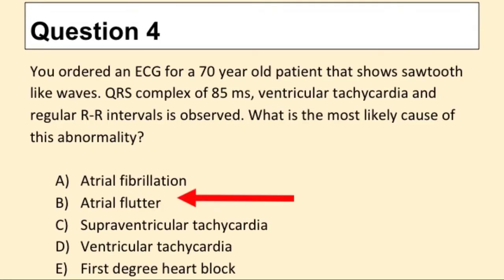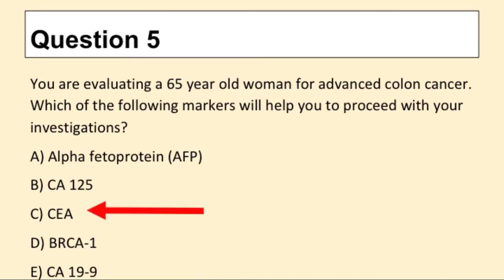Question 4. You ordered an ECG for a 70-year-old patient showing sawtooth-like waves, QRS complex of 85 milliseconds, ventricular tachycardia, and regular RR intervals. What is the most likely cause of this abnormality? The answer is B: atrial flutter.